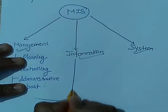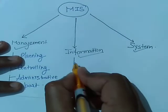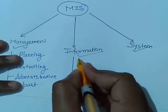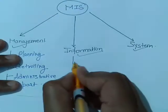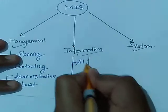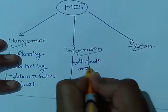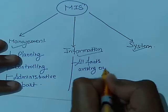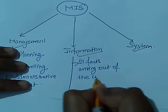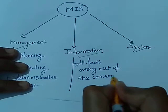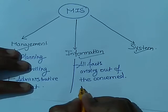Information, as I told you, is processed data that helps management in planning, controlling, and operation. Data means all facts and products arising out of the concerned operation.